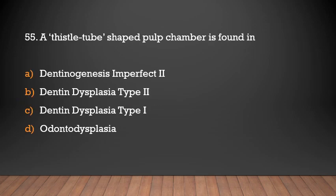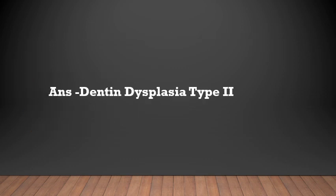Thistle tube shaped pulp chamber is found in: dentinogenesis imperfecta type 2, dentine dysplasia type 2, dentine dysplasia type 1, odontodysplasia. Answer: Dentine dysplasia type 2.